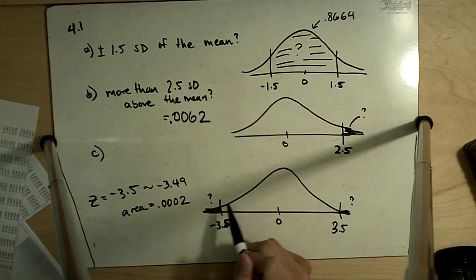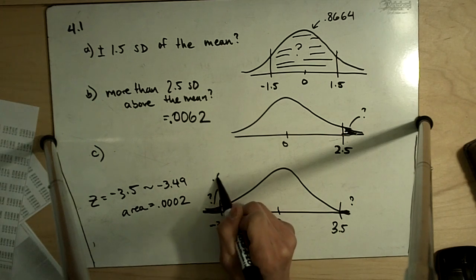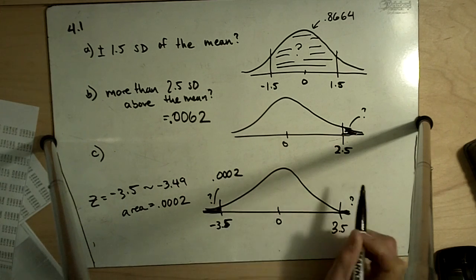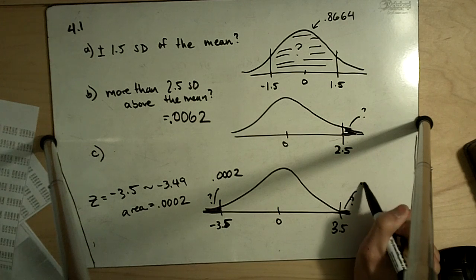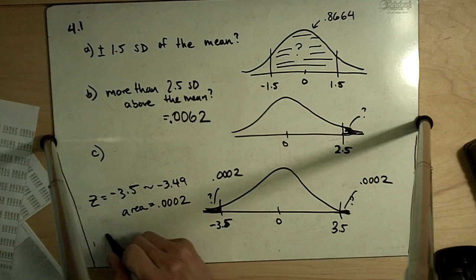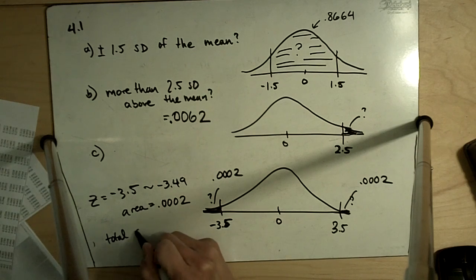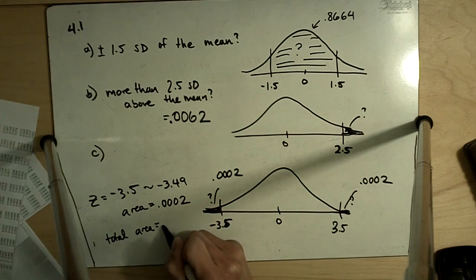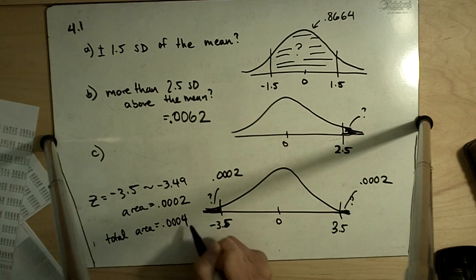Because the normal distribution is symmetric, we will have 0.0002 over here and 0.0002 over here for a total area in the tails of 0.0004.